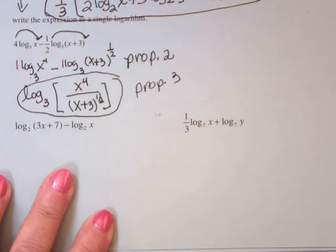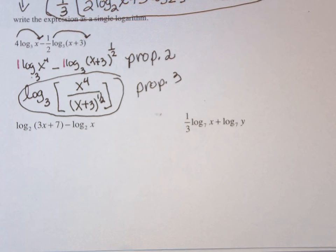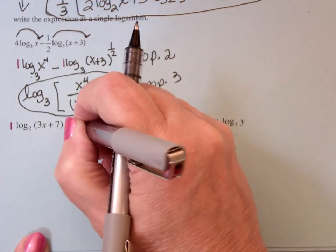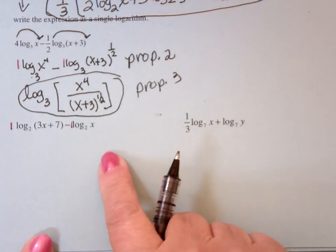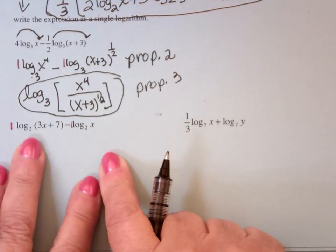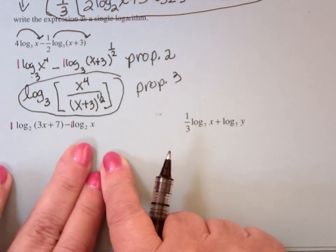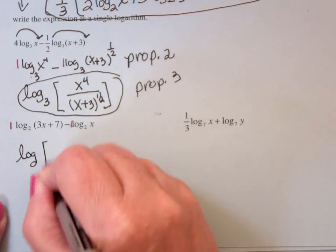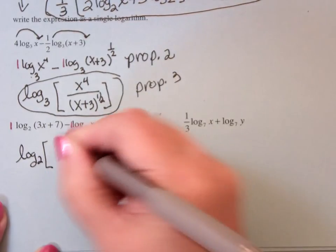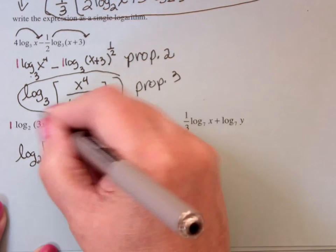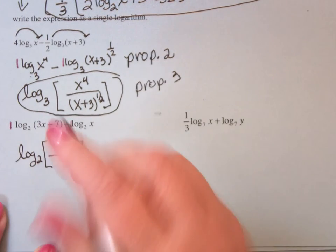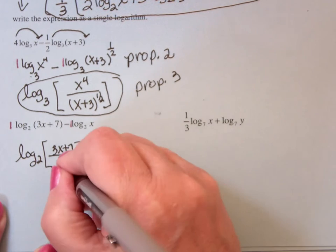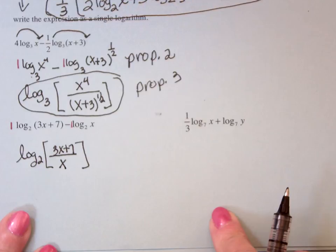Now, I notice right away the coefficient of this log is 1, the coefficient of this one is also 1. So I can use the property directly. I've got log base 2 of something subtract log base 2 of something, and subtraction says it turns into a quotient. It's log base 2, and the numerator is the one with the plus in the front, and the denominator is the one with the minus in front. So it is the quotient of the two arguments.